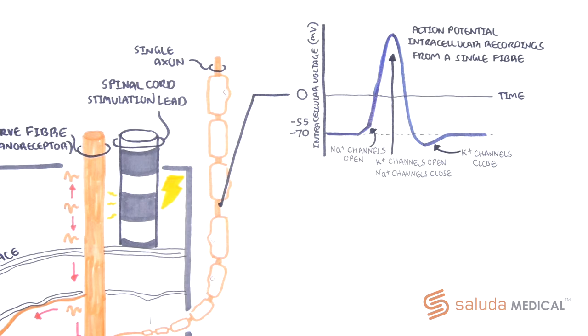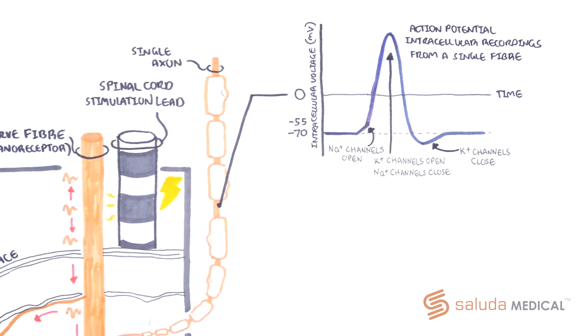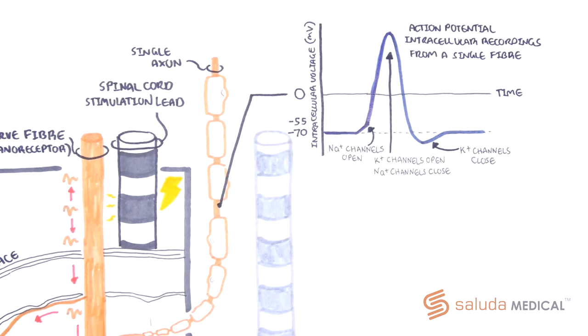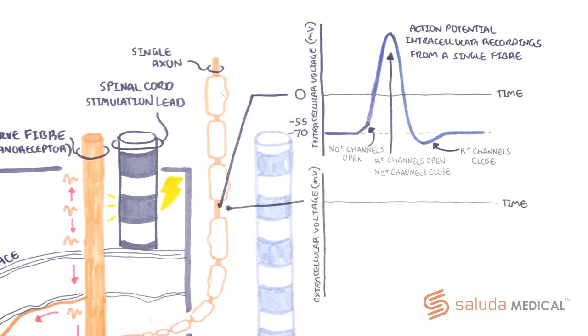The evoke spinal cord stimulation system can detect voltage changes in the spinal cord from an epidurally placed lead, which means it is detecting extracellular potentials from outside the cell. As such, the shape of the signal recorded will look like a mirror image of that measured intracellularly.